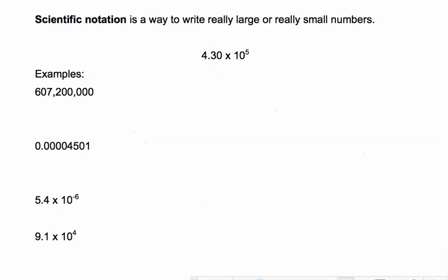Scientific notation is a way to write really large or really small numbers so they're easier to read. So we have an example here, 4.30 times 10 to the positive 5th.